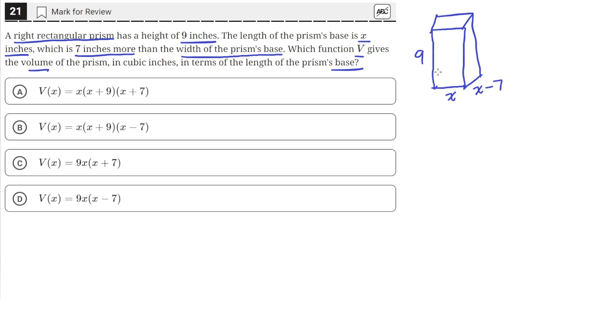So if we put this all together in the formula for the volume of a rectangular prism, which is length times width times height, we just multiply these three quantities together to get the volume. So 9 times x times (x minus 7).